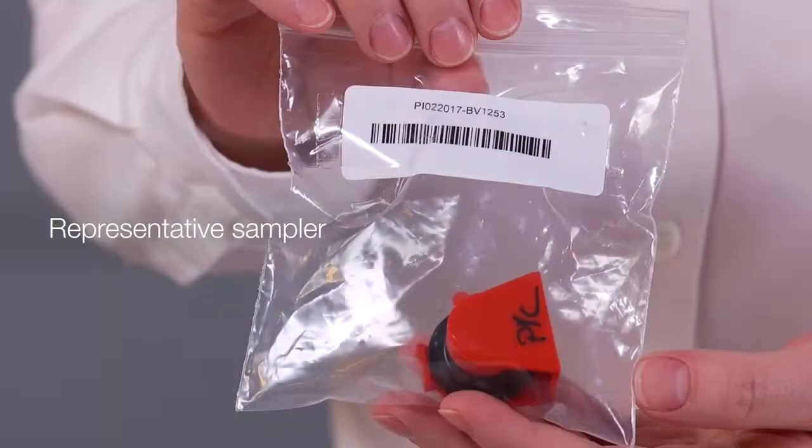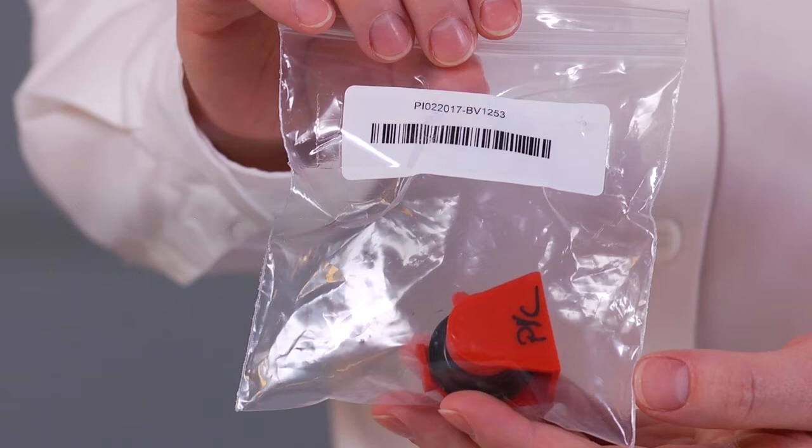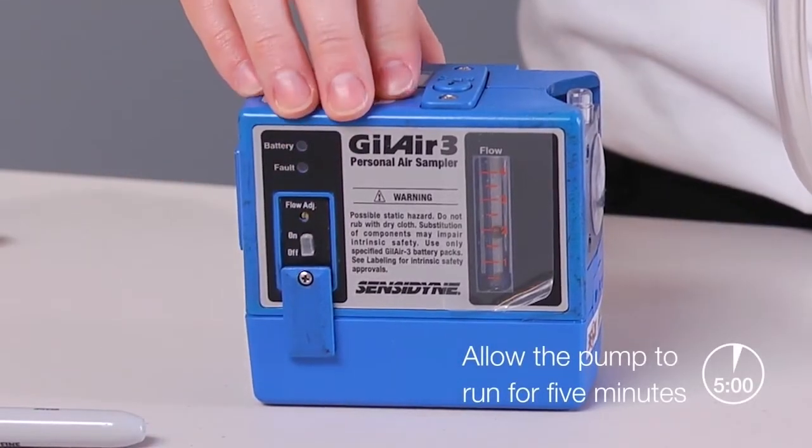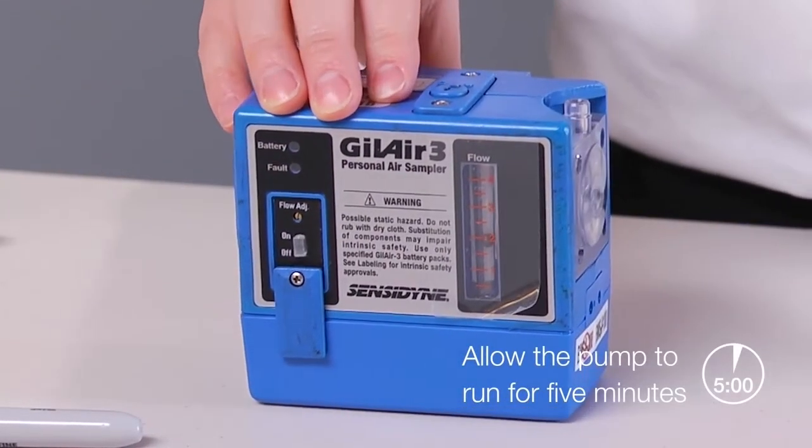Now we are ready to calibrate the pump for sampling. It is good practice to designate a representative sampler for calibration, which will be used and retained for post calibration, but make sure it's not used to collect an actual sample. Also allow the pump to run for about five minutes before you start.